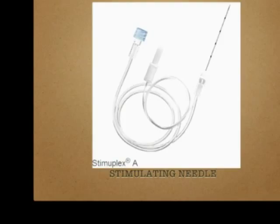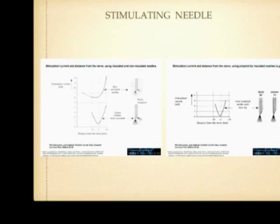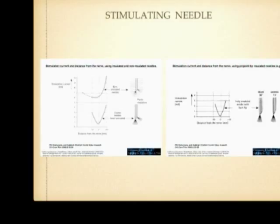Why should the stimulating needle shaft be insulated? If the shaft is not insulated, currents are dissipated from all over the shaft as well as from the tip, requiring a higher amount of energy to stimulate the nerve. But if the needle is insulated throughout the shaft and only the tip discharges electrical pulses, it requires much less current to stimulate the nerve. Nowadays most needles come with a 30-degree bevel, which helps decrease nerve injury if you are close to the nerve.